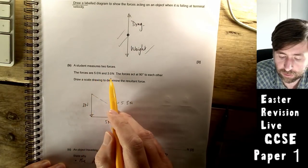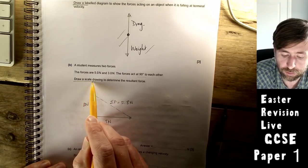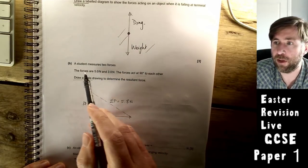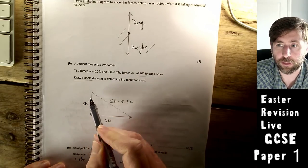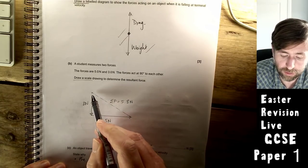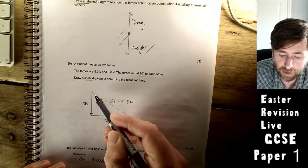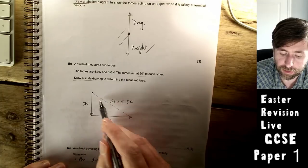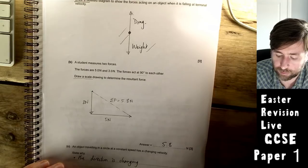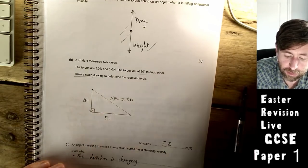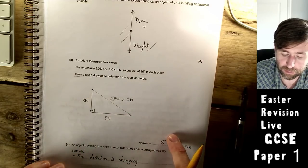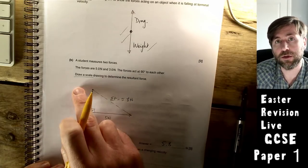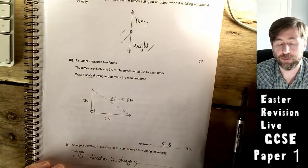A student measures two forces: five newtons and three newtons. They act at 90 degrees to each other. Draw a scale drawing to determine the resultant force. Whenever you're doing a scale drawing, always combine the forces top to tail. I've drawn one 3cm line with the ruler and then one 5cm line at right angles to each other, top to tail. The resultant force is from start to finish. You can measure that and it came out 5.8cm. So it's 5.8 newtons. They needed to be right angles to each other and the same scale. You could resolve this by Pythagoras, but because they told you to do it with a scale drawing, you probably wouldn't get all the marks.